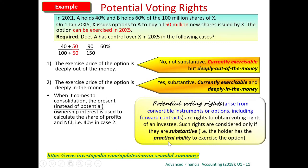If we consider this potential voting rights: before exercising, A has 40%. If A exercises the option, A will have 90 out of 150 shares. 90 out of 150 is more than half, so A has the power. We will consider this potential voting rights even before exercising if it is substantive. Substantive means having the practical ability to exercise.